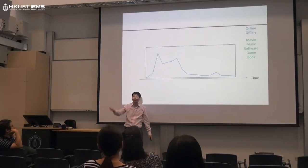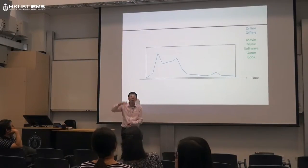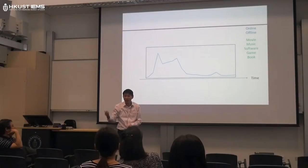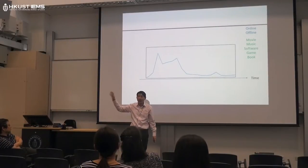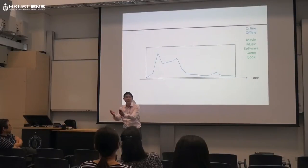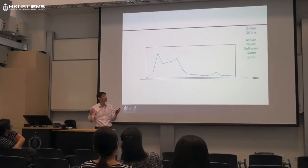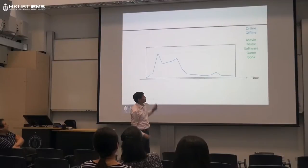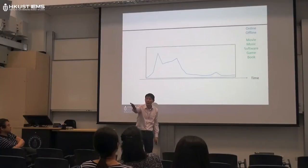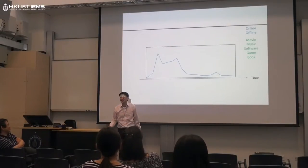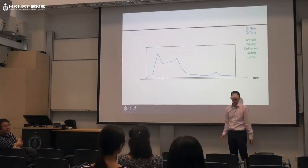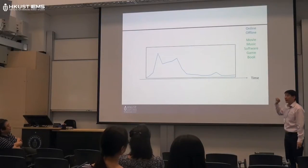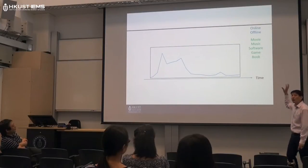The infringing activity curve also depends on the type of digital content. Movie is very popular but takes a long time to download. Using BT, you can leave it and come back the next day to find everything ready in your hard drive. Music files are shorter but there are many of them. Software — do you buy software? No? You're taking a risk if you don't, as there are lots of problems. Games, digital books — all these kinds of digital content have different infringing activity patterns.